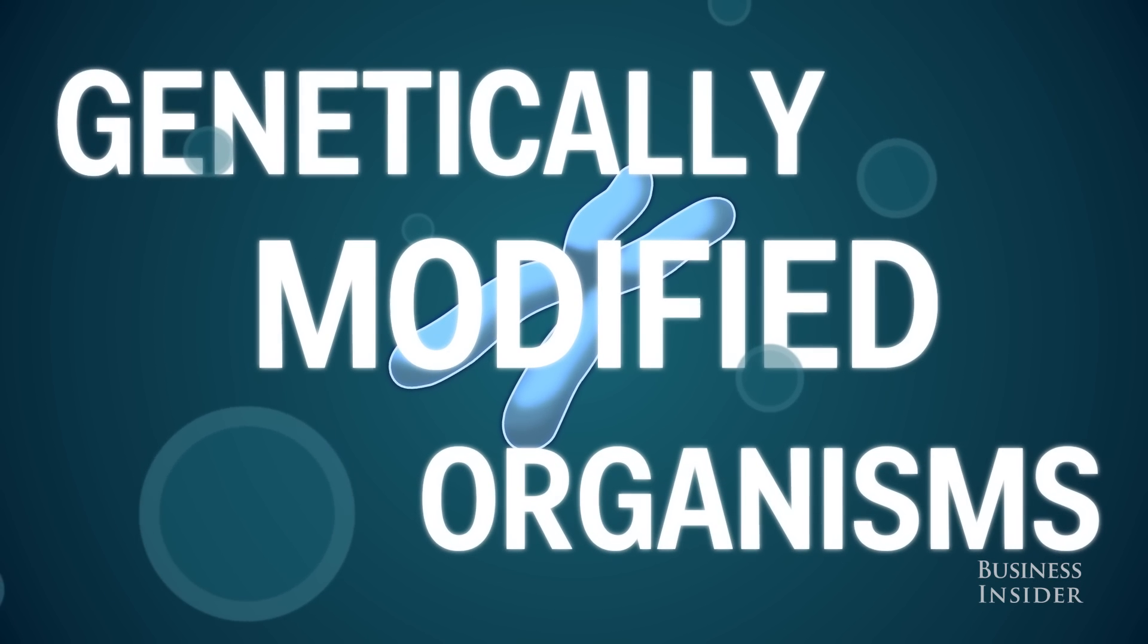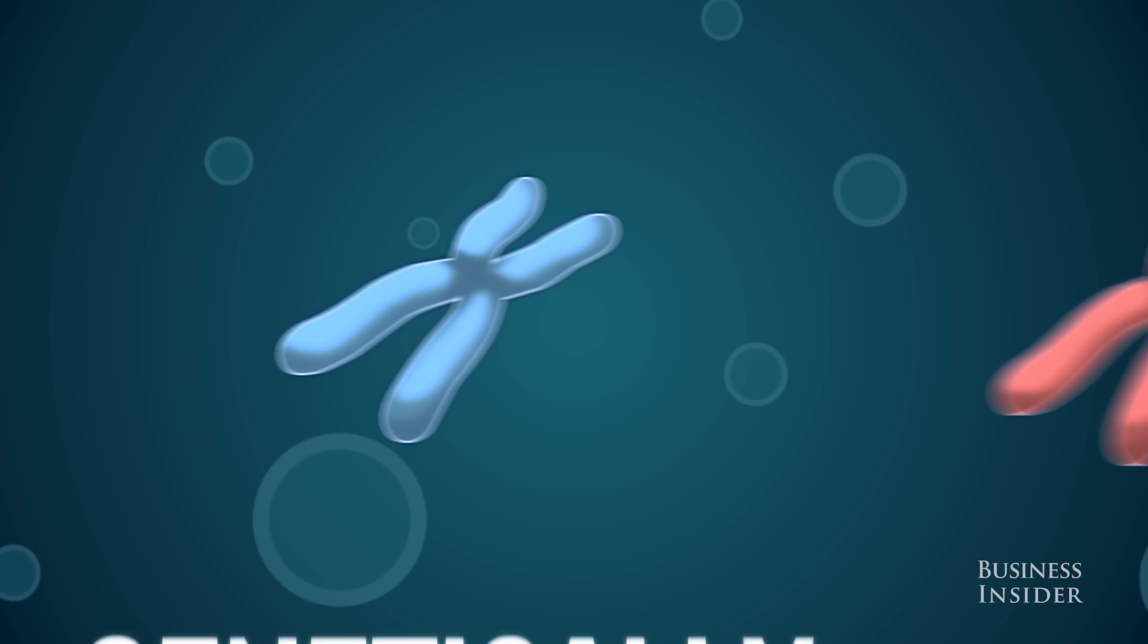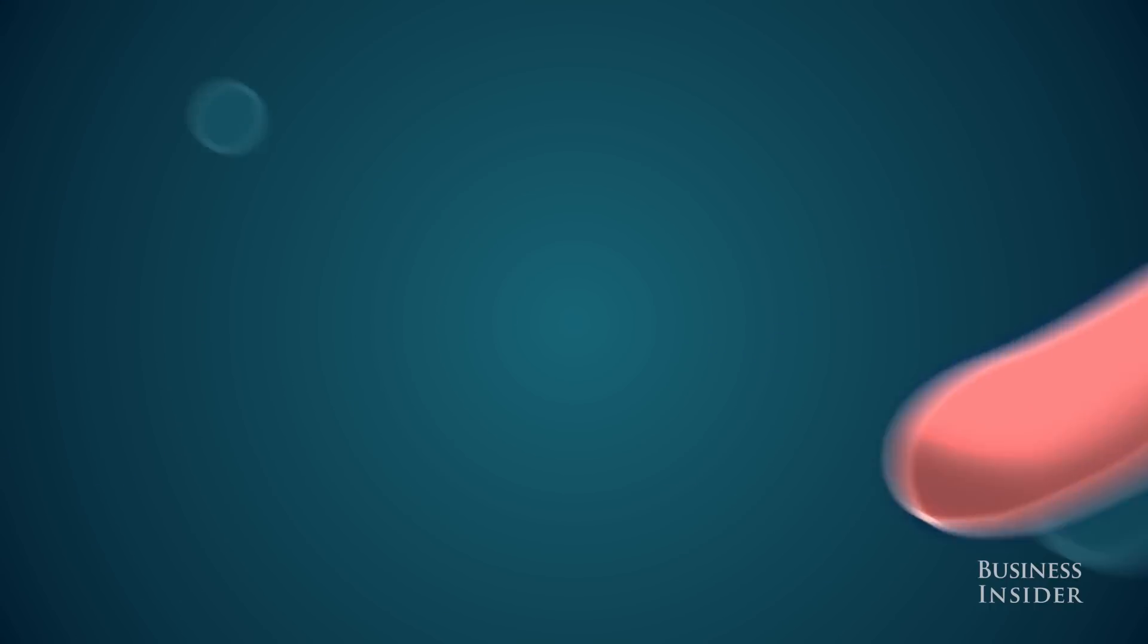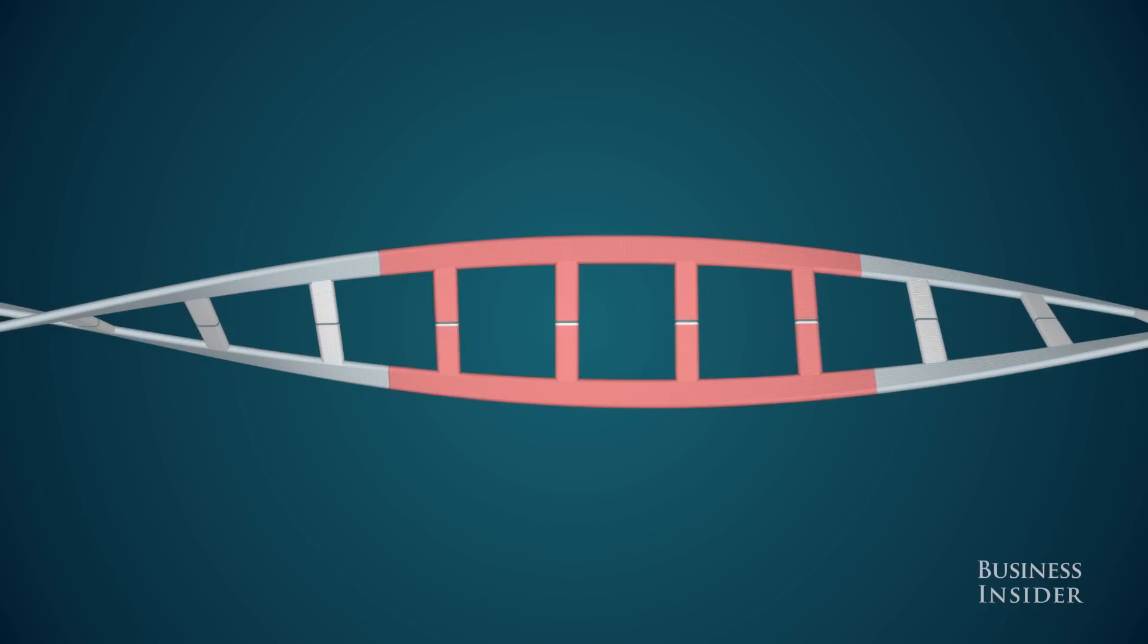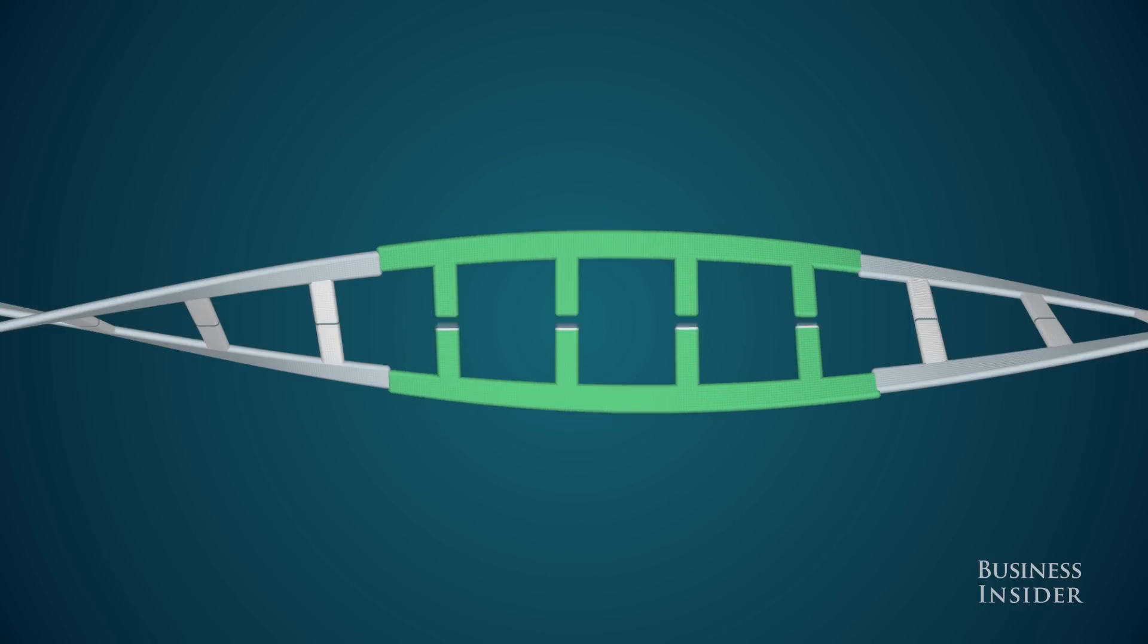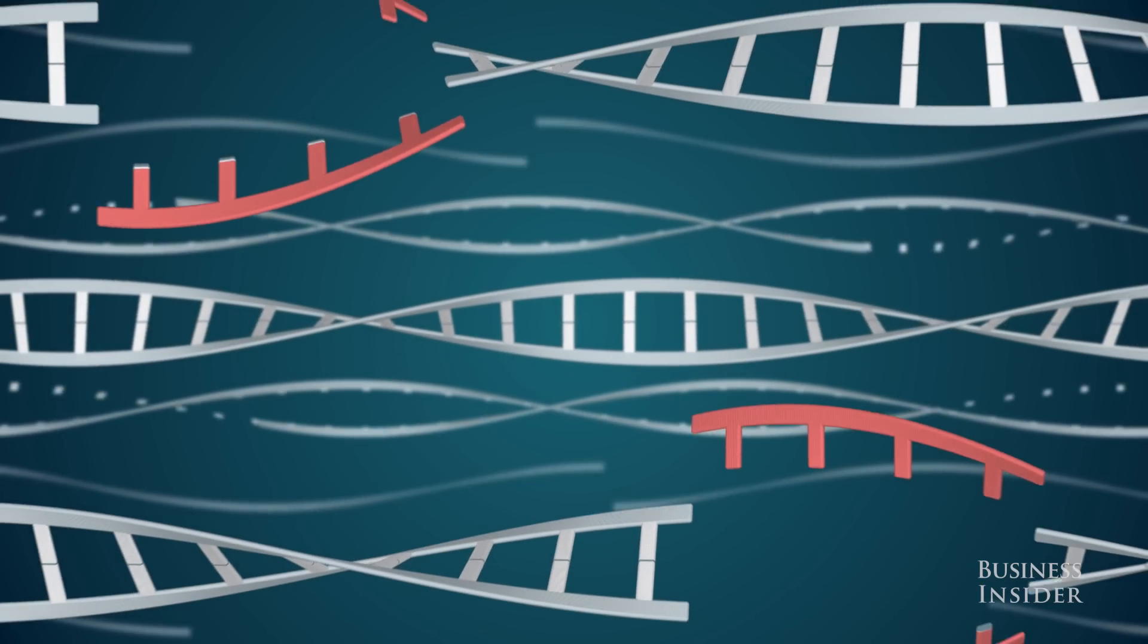It's different from how GMOs are often created, where you're taking an existing gene from another species and inserting it into another species. In this case, you can just say this particular piece of DNA I don't like so much, I just want to change it a little bit, and you can make that precise change.